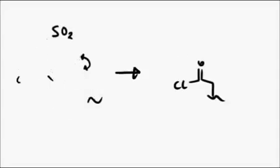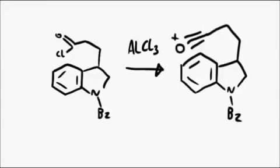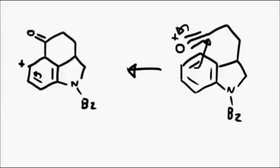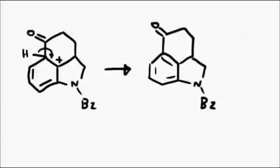This is used in the next step, where an intramolecular Friedel-Crafts reaction is performed. Aluminium trichloride pulls off a chloride ion and generates an oxonium intermediate. The charge can be delocalized around the ring to this tertiary center, which is stable enough, and then deprotonation restores the aromaticity.